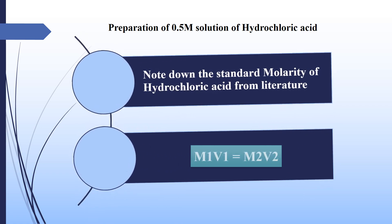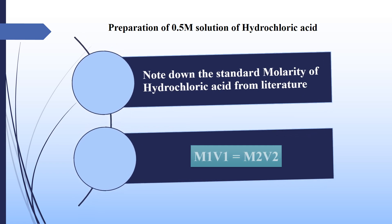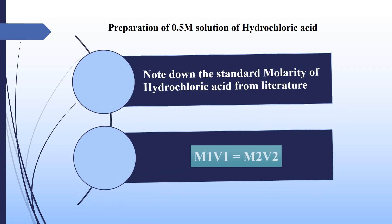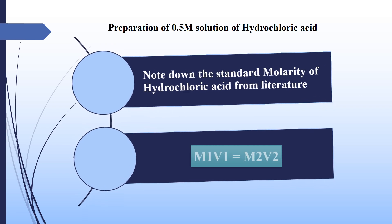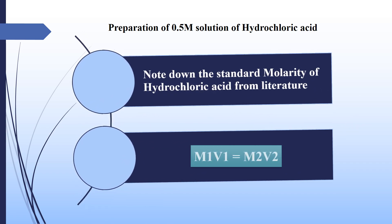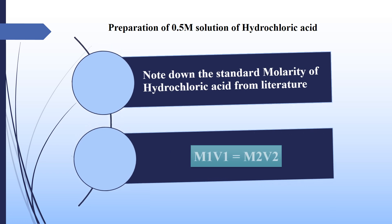V1 is the volume which will be taken out from the acid's bottle. M2 is the molarity which we want to prepare — in this case we want to prepare a 0.5 molar solution. V2 is the required final volume of solution, which can be 100 milliliters, 200 milliliters, 250 milliliters, 500 milliliters, or 1000 milliliters, according to the volume required.